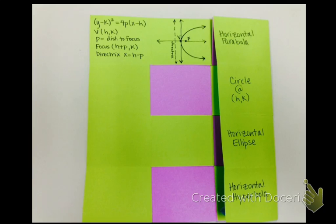P is the distance from the vertex to the focus. It's also the distance from the vertex to the directrix. To find the location of the focus point it's H plus P comma K. The equation for the directrix is X equals H minus P.